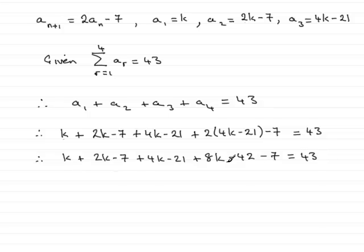Simplify this, just group together the k's and the constants, and what you should find you get is 15k and then minus 77, and that equals the 43.